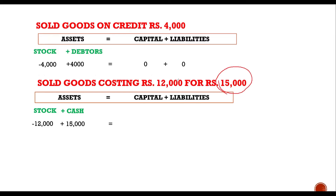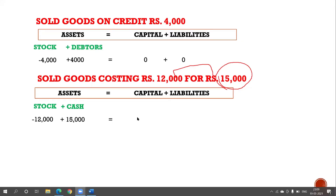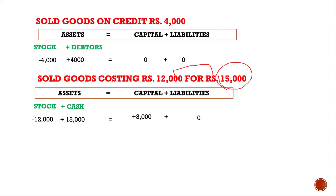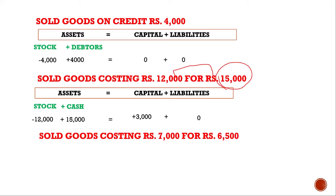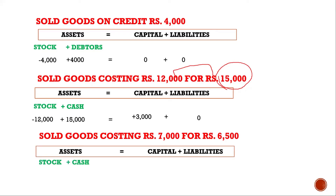We are earning a profit of rupees 3,000, so capital increases by 3,000 without any change in liabilities. What if these goods are sold on cash basis but we incur a loss? Stock will decrease by 7,000 which is the cost, cash in the business is 6,500, and capital will show a loss of 500 which will decrease the owner's equity, that is capital.